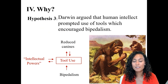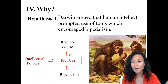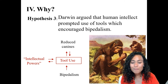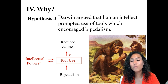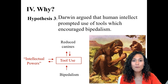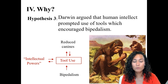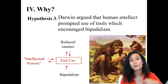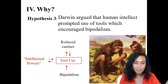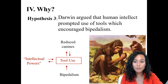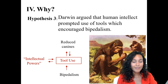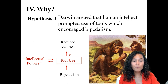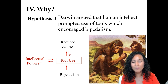One final hypothesis is the idea originally offered by Darwin in 1871. Darwin basically argued that human intellect prompted the use of tools, which encouraged bipedalism. According to Darwin, hominin ancestors started to experiment with tools, and that experimentation was linked to the development of larger brains. Bipedalism allowed hominins to carry food or other portable items over long distances and freed up forelimbs for tool use. In the next module, Module 1.3, we'll dive deeper into this idea that tool use was an important mechanism for driving human evolution.